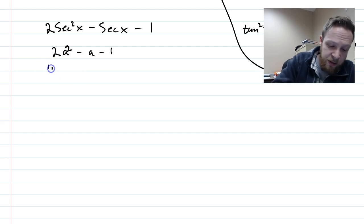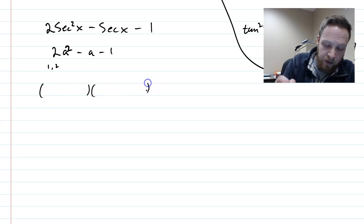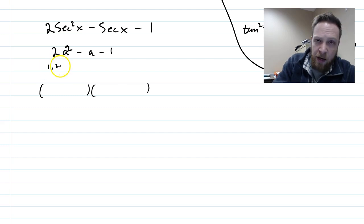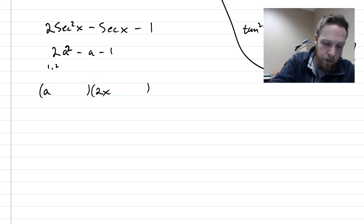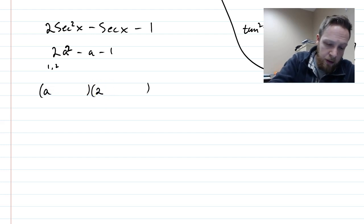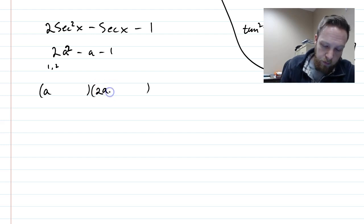Now, there are lots of neat little tricks to factor something when there's a number in front. What I suggest is you just think about the possibilities for the leads of your binomials. So I know that to get 2a squared, it would have to be 1a and a 2a. And there's no other possibility. So I'm just going to put an a and a 2a there.